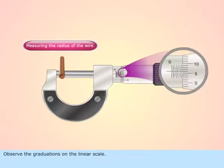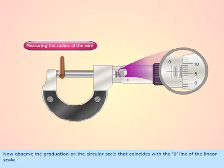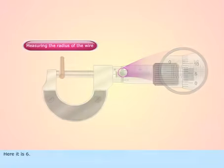Observe the graduations on the linear scale. Here it is 4.5. Now observe the graduation on the circular scale that coincides with the zero line of the linear scale. Here it is 6.